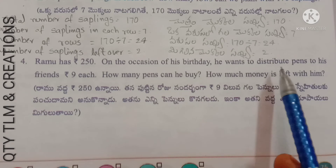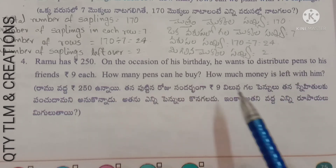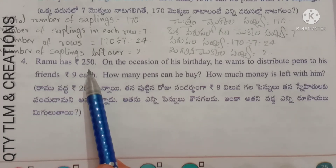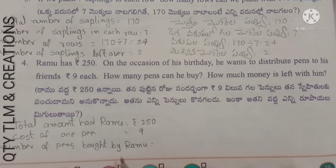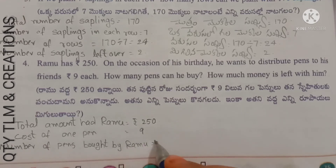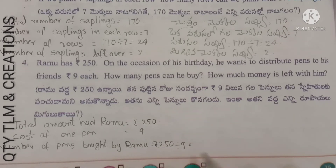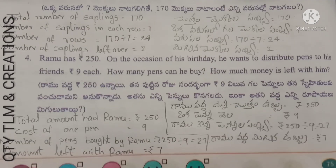Next question: Ramu has 250 rupees. On his birthday, he wants to distribute pens to his friends; each pen costs 9 rupees. How many pens can he buy and how much money is left? Total amount = 250 rupees. Cost of 1 pen = 9 rupees. Number of pens bought = 250 divided by 9 = 27 pens. Amount left with Ramu = 7 rupees. Children, we will continue with other topics in another video. Until then, take care. Thank you, bye bye!